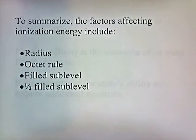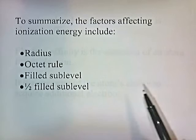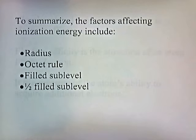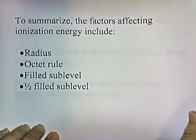To summarize, the factors affecting ionization energy include: the radius — a small radius means higher ionization energy; the octet rule — if an atom has an octet, ionization energy is elevated; a filled sublevel, like a filled S-sublevel with two electrons, elevates ionization energy; and a half-filled sublevel, like nitrogen and group 5 elements have, stabilizes the atom and elevates the ionization energy, since the atom is reluctant to give up that half-filled sublevel configuration.